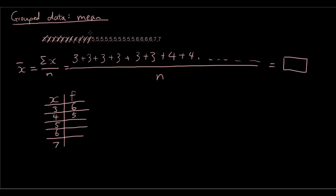Let's look at the number 5 — 5 has occurred 10 times. 6 has occurred 4 times. And 7 has occurred twice.